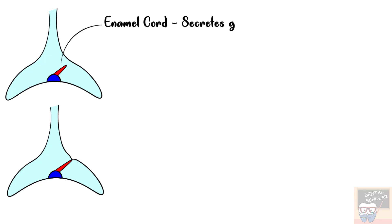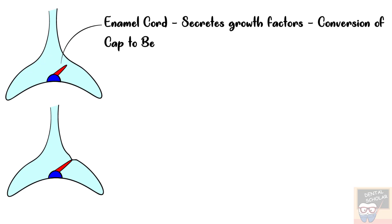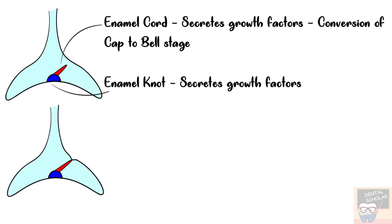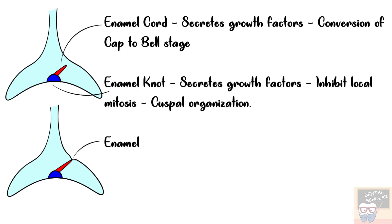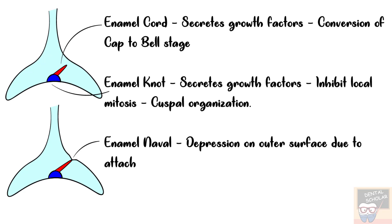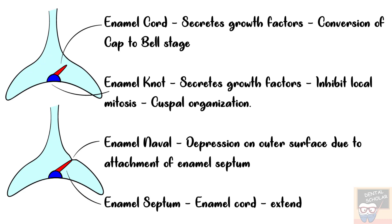The enamel cord secretes growth factors that help in the conversion or transition from cap to bell stage. The enamel knot secretes growth factors that inhibit local mitosis and thus helps in establishing occlusal anatomy — it is also called the cuspal organizational center. Enamel navel is a depression on the outer surface of the enamel organ formed due to attachment of the enamel septum. The enamel septum is the enamel cord when it extends to the outer enamel epithelium.